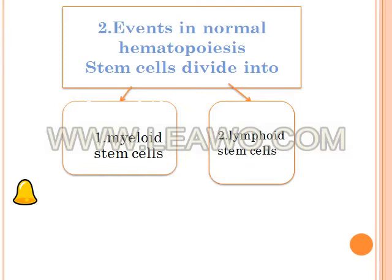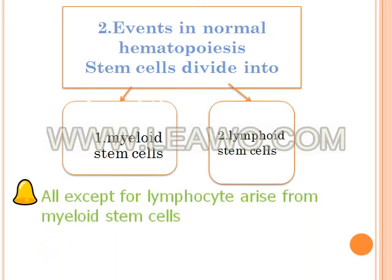Events in normal hemopoiesis: stem cells divide into myeloid stem cells and lymphoid stem cells. Just remember that all blood cells arise from myeloid stem cells except for lymphocytes.